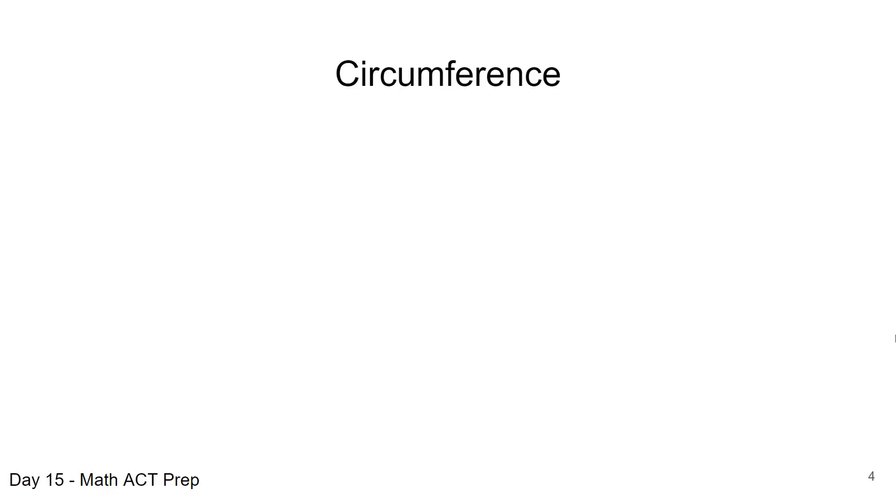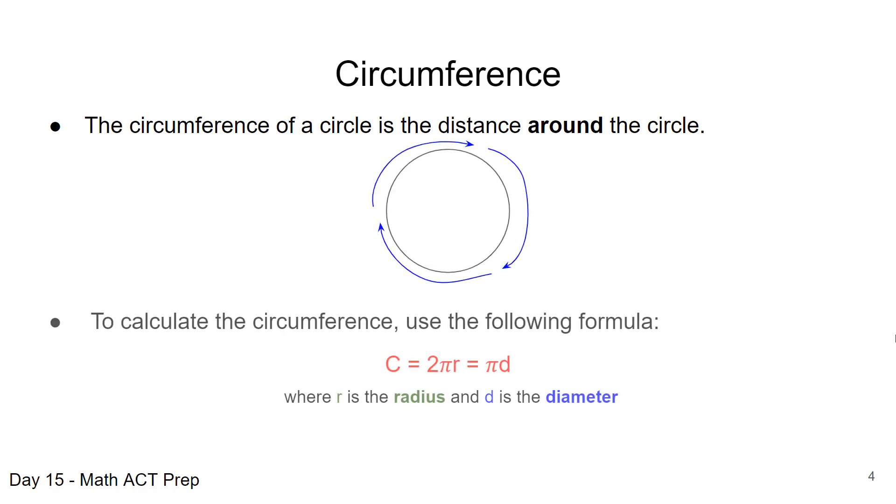So when we talk about circumference, if you'll remember from the perimeter video, we mentioned that when we're talking about going around a circle, we use different terminology, and what we use is circumference. That represents the distance around a circle. So when we're looking at that, we have a formula to calculate the circumference, and it's going to make use of π and the radius or the diameter, whichever one you want to use.